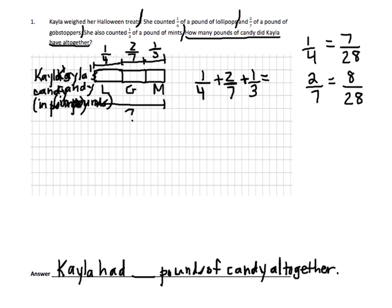Let's add up those two fractions first. Seven twenty-eighths plus eight twenty-eighths equals seven twenty-eighths plus eight twenty-eighths plus one-third. Adding the seven-twenty-eighths plus eight-twenty-eighths gives me fifteen twenty-eighths plus one-third.